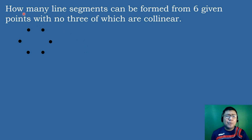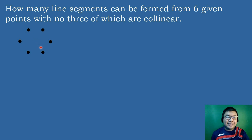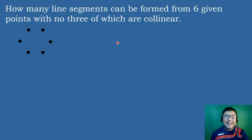The question is: how many line segments can be formed from 6 given points? This illustrates combinations because order does not matter — whether you start at one endpoint or the other, the line segment formed is the same. Therefore, this is an example of combinations.